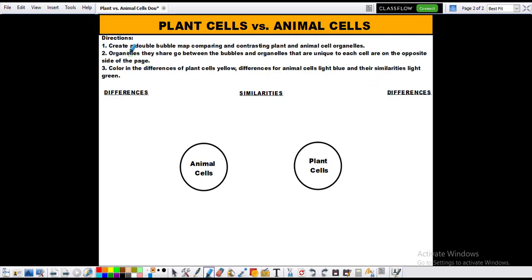Now number two says the organelles they share go between the bubbles. So any similarities go right down the middle here. And organelles that are unique to each cell are on the opposite sides of the page. So the differences, the unique characteristics, get listed out here. When you are done, color the differences of plant cells yellow.